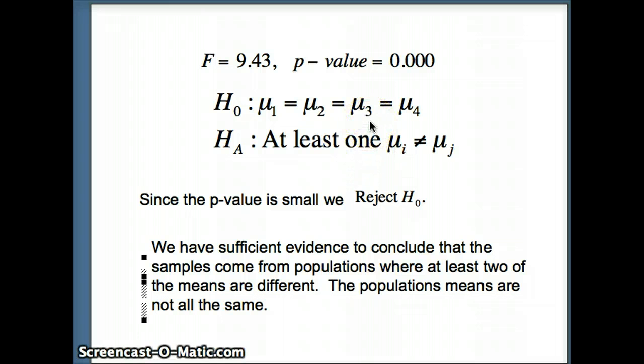Now what did H-naught say? H-naught said that the four types of soda pop came from populations where the means were all the same. Well that's not the case. We get a small P-value, we've got to say that we have sufficient evidence to conclude that the samples come from populations where at least two of the means are different. The population means are not all the same.